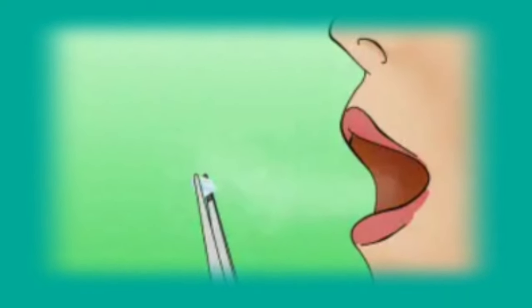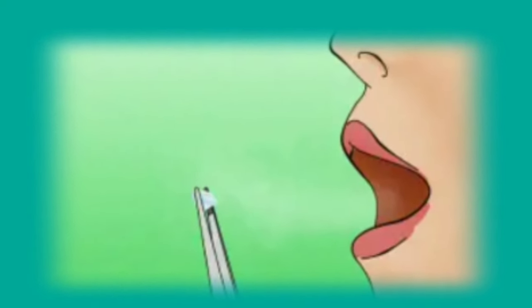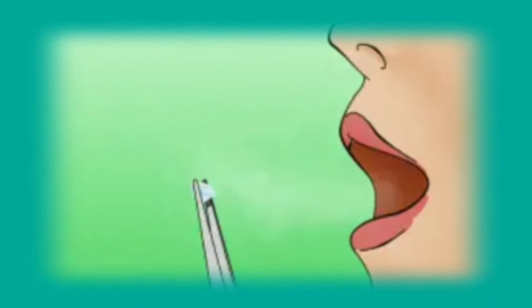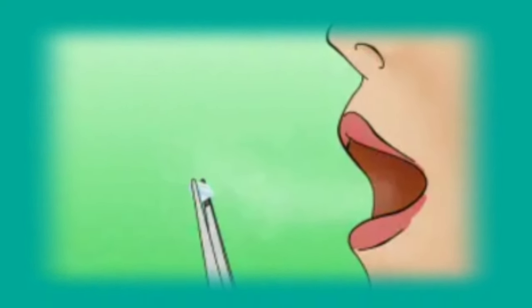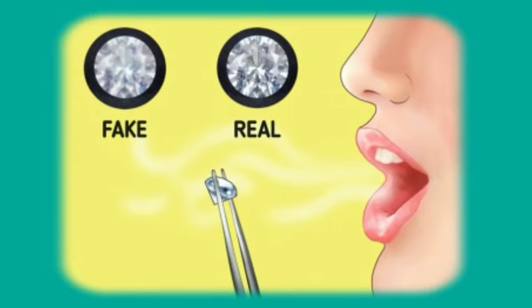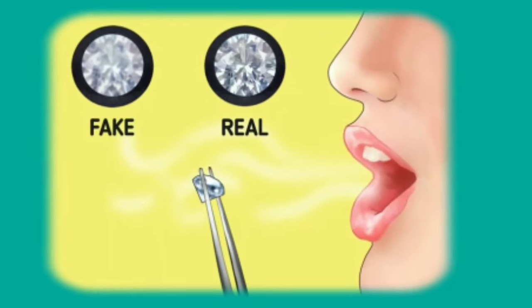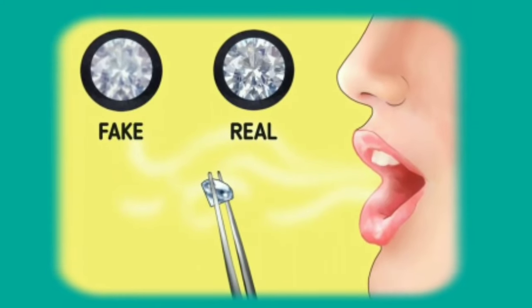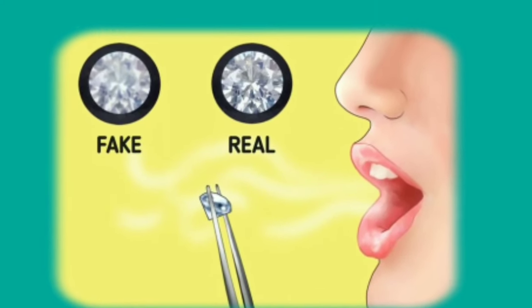Fog test. This is a less extreme test of the stone's ability to conduct heat. To carry out the fog test, hold the diamond between two fingers so that it can be clearly seen, and breathe on it. If the fog immediately dissipates, it is likely that the stone is a real diamond. If the fog remains for several seconds, it means that the stone is not effectively conducting heat and is a fake.